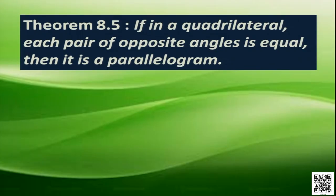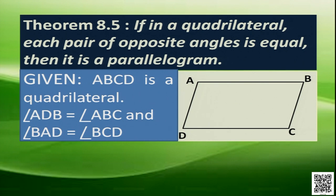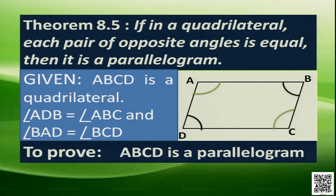To prove the converse, let ABCD be a quadrilateral where opposite angles A and C are equal, and opposite angles D and B are equal. We have to prove that ABCD is a parallelogram. To do this, we will use the angle sum property and the co-interior angle property of parallel lines.